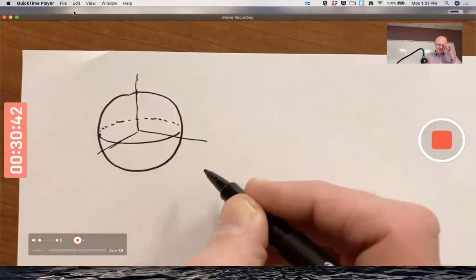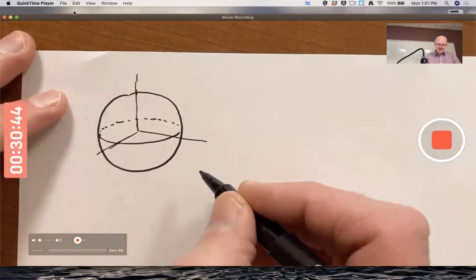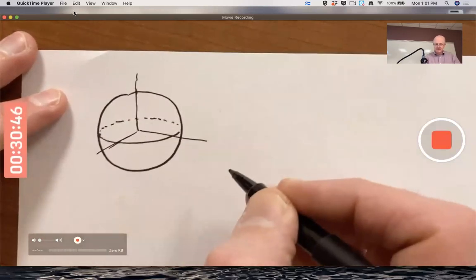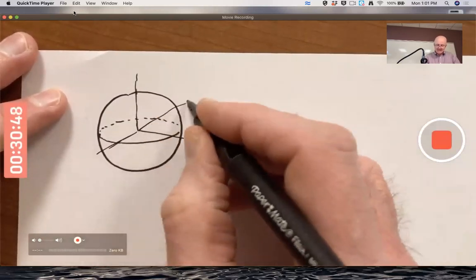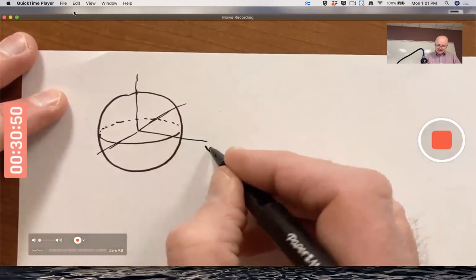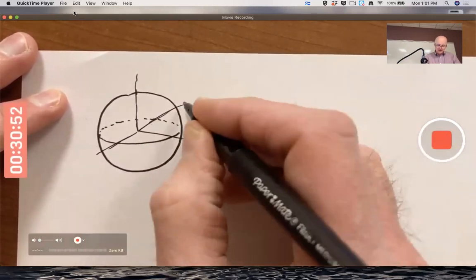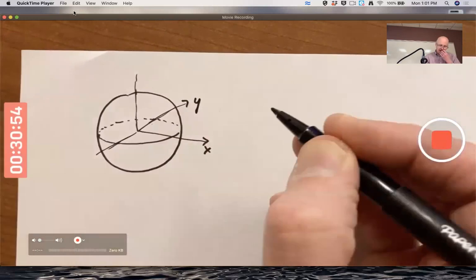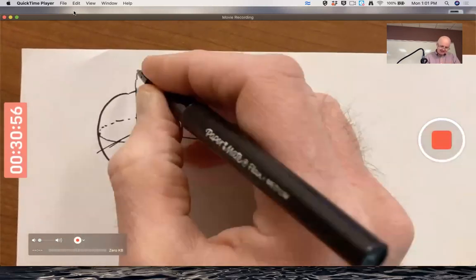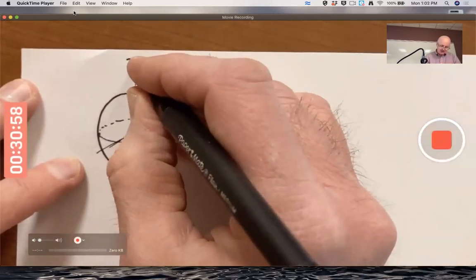So choose your coordinate system so that the origin is at the center of the sphere. And you've got, notice you've got three axes here. Say an x-axis going to the right there, a y-axis maybe going into the paper like that, and the third axis, I guess, let's call it the z-axis going straight up.